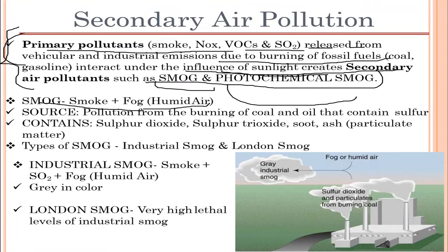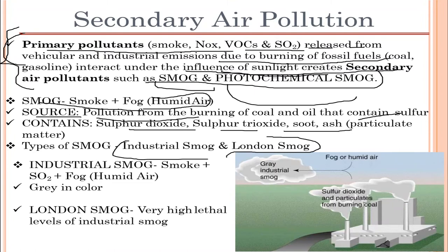Smog is a combination of smoke and fog that leads to the formation of humid, heavy air. Its sources include pollution from burning of coal and oil, which contain sulfur dioxide and sulfur trioxide, and soot ash. There are different types of smog, which include industrial smog and London smog.